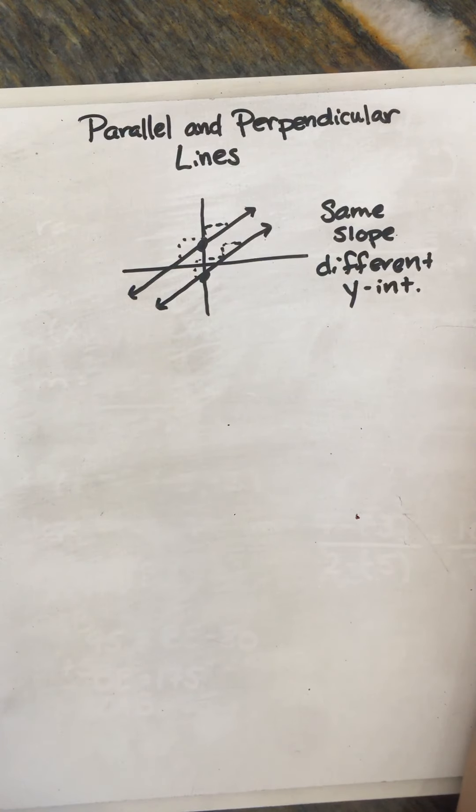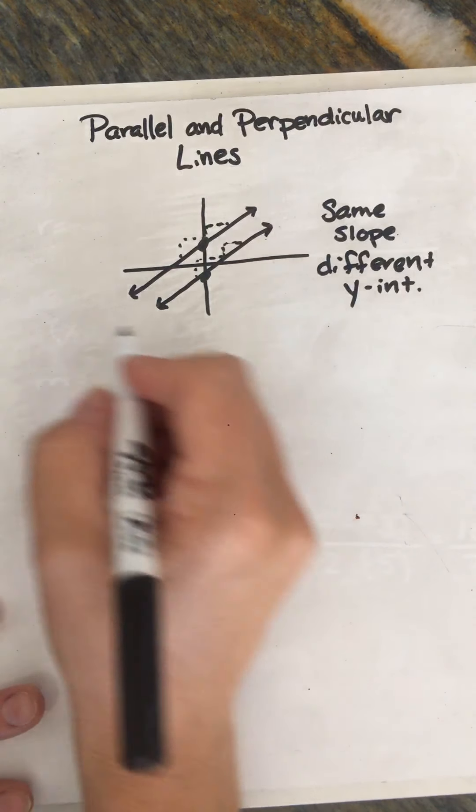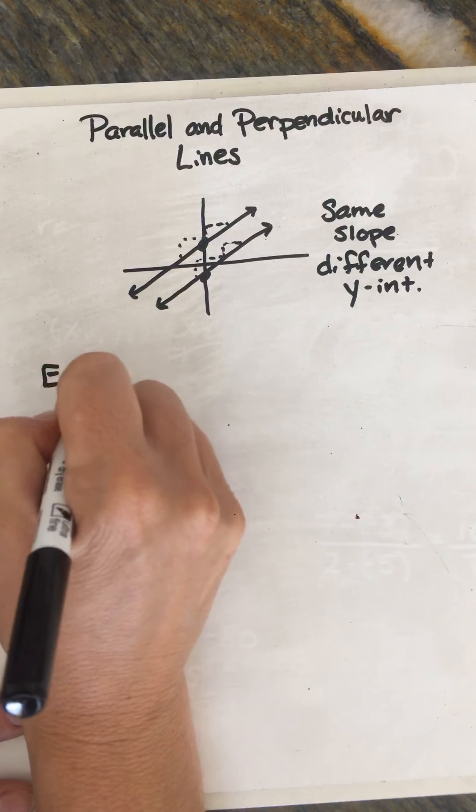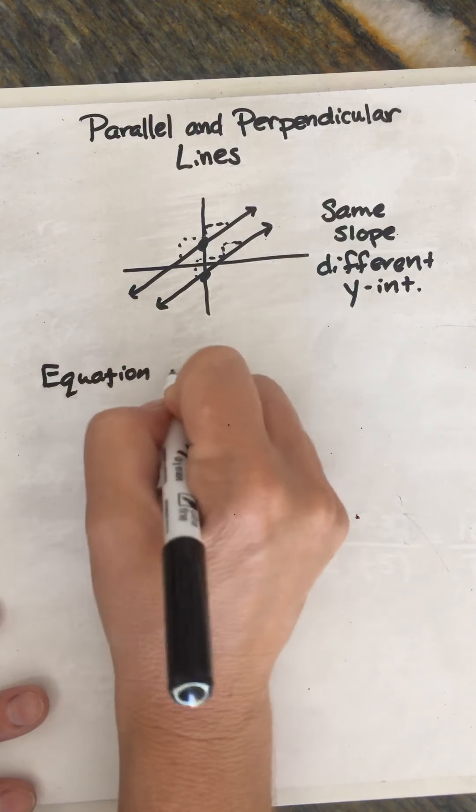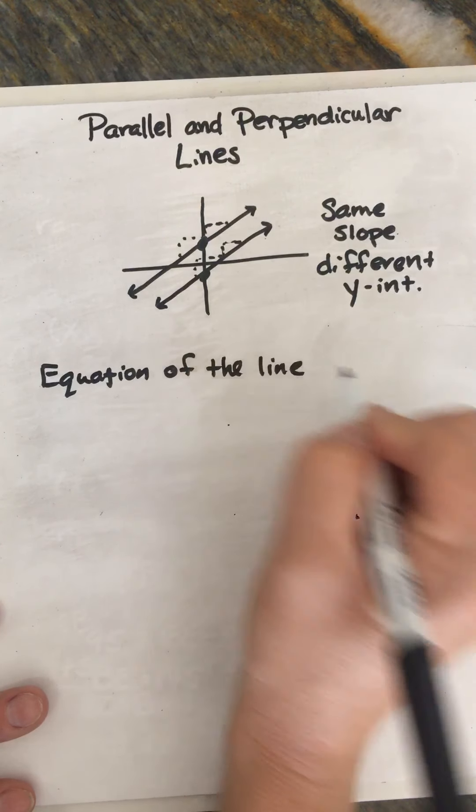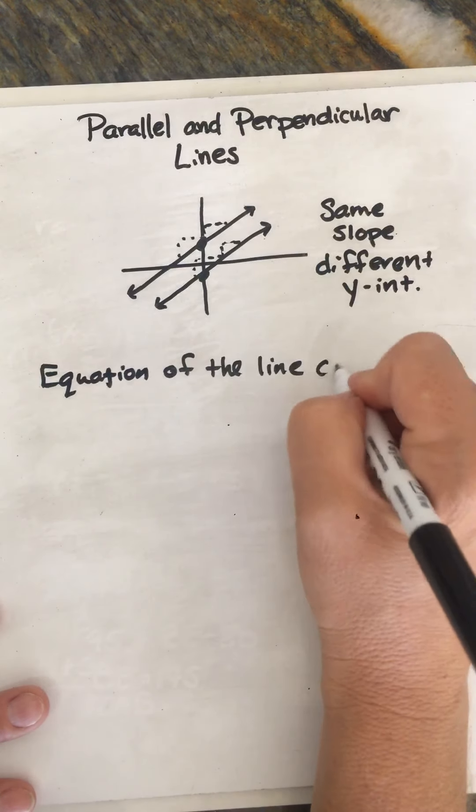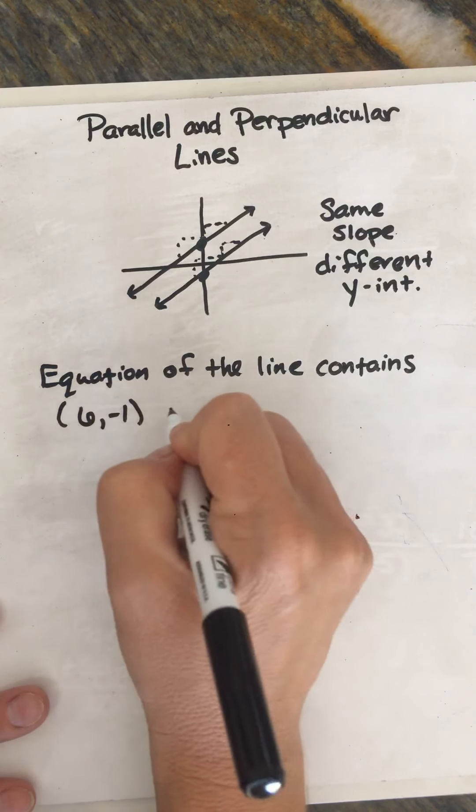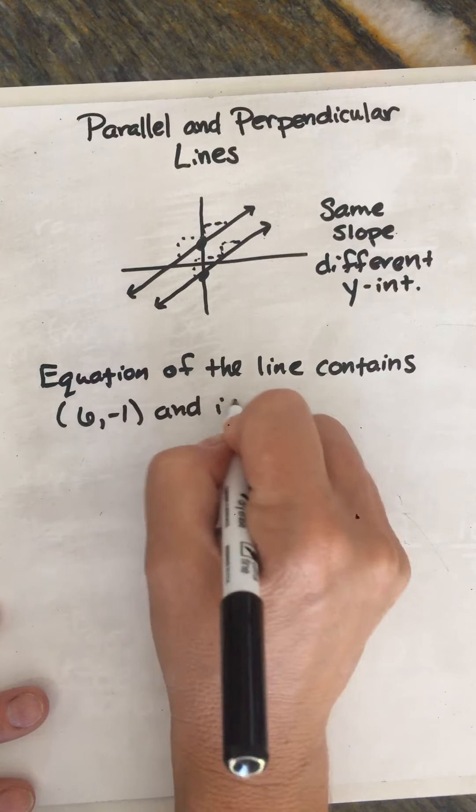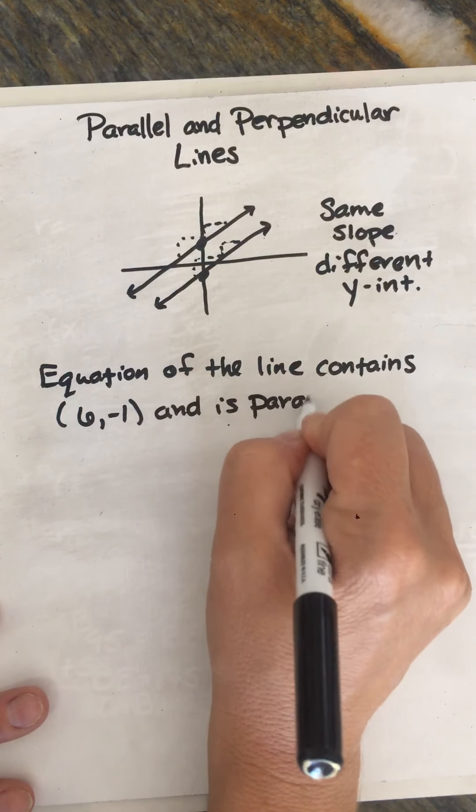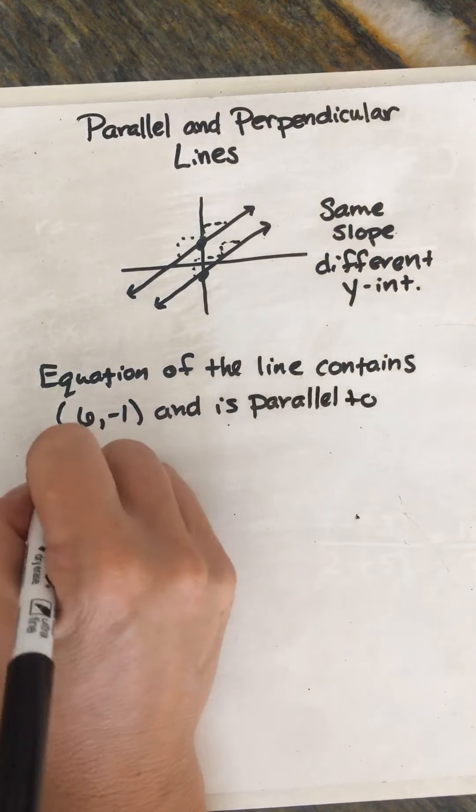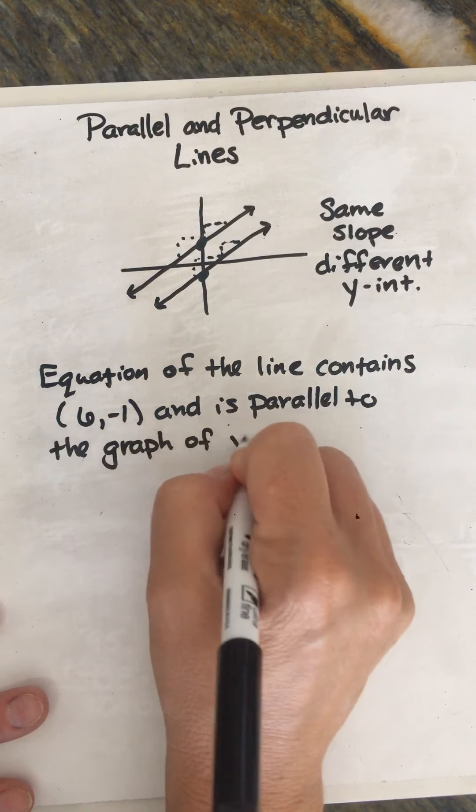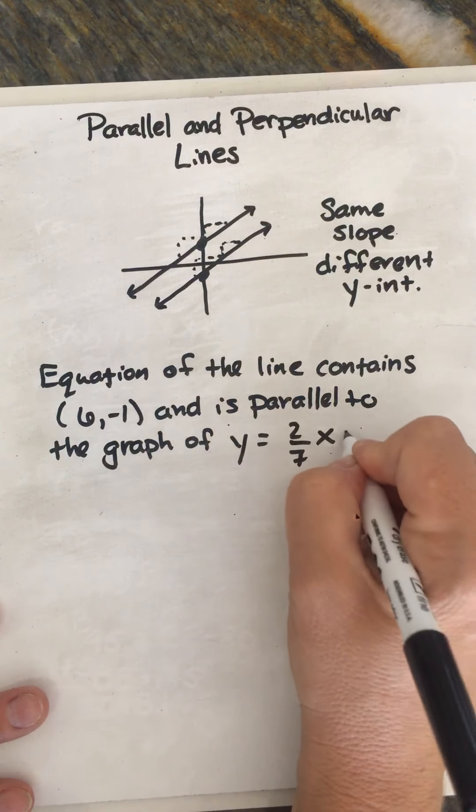All right, so we'll write the equation of a line. The equation of the line that contains the point (6, -1) and is parallel to the graph of y = 2/7x + 3.